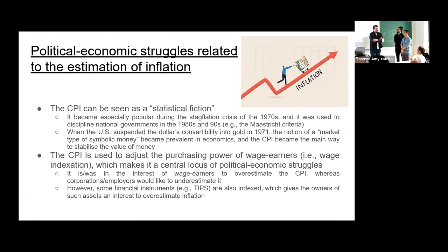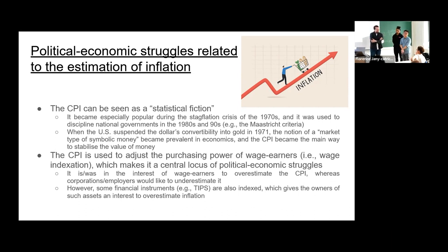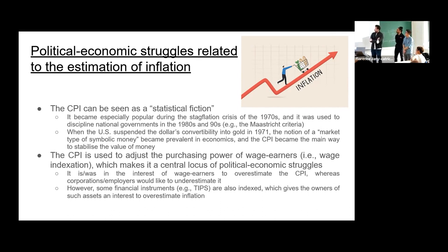When you mentioned applying ideas from the regulation school, everything clicked — the framework makes much more sense now. I think the CPI became especially popular during the 1970s stagflation crisis. It was used to discipline national governments in the 1980s and 90s, particularly related to the Maastricht Treaty. And when the US suspended the dollar's convertibility into gold in 1971, the CPI became especially important as symbolic market-based money became prevalent in economics.